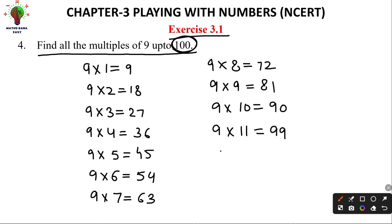After this, if we do 9×12, that value will be greater than 100. So we won't do that. We'll stop here because we need to find up to 100. So what are the multiples?